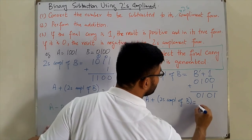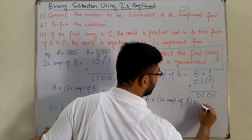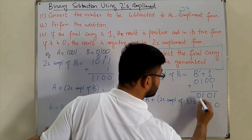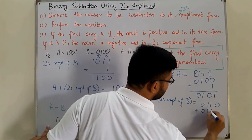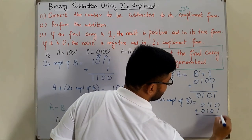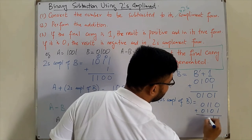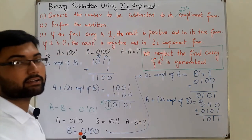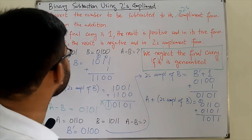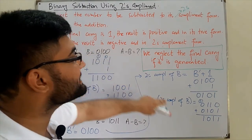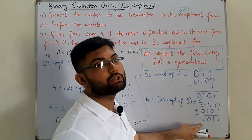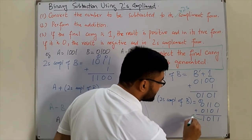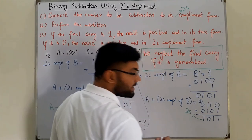We add A (0110) and the two's complement (0101): one plus one is zero carry one, one plus zero is one carry one, one plus one is one carry one, zero plus zero plus carry is one — but we don't have a final carry here. Since the final carry is zero, the result is negative and in two's complement form.